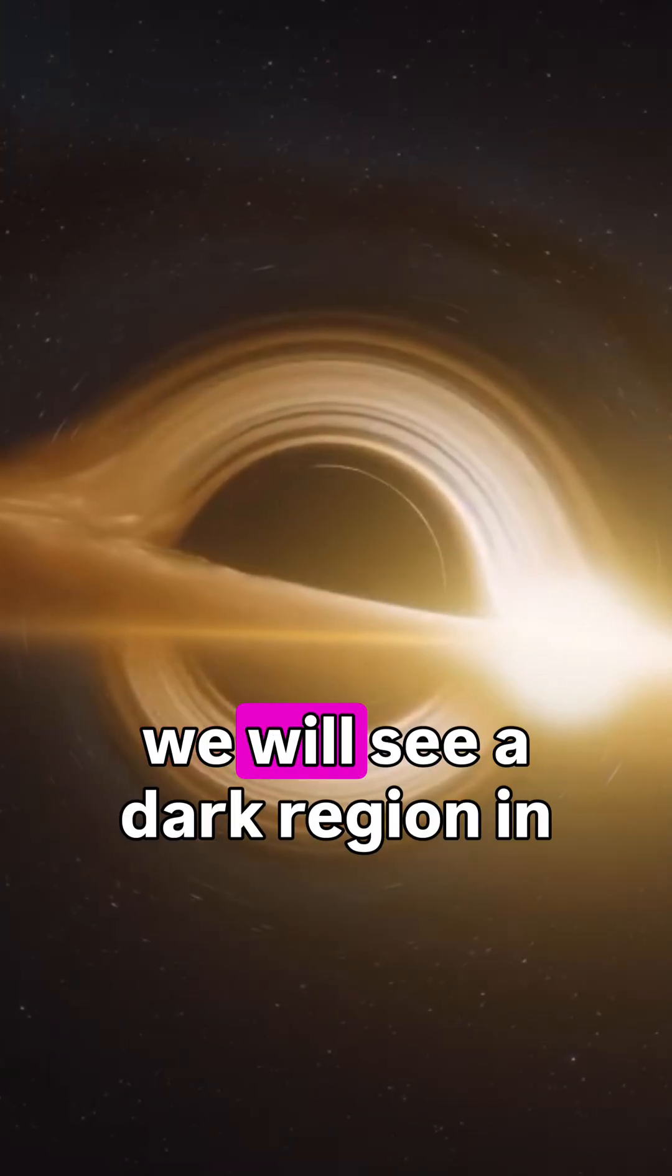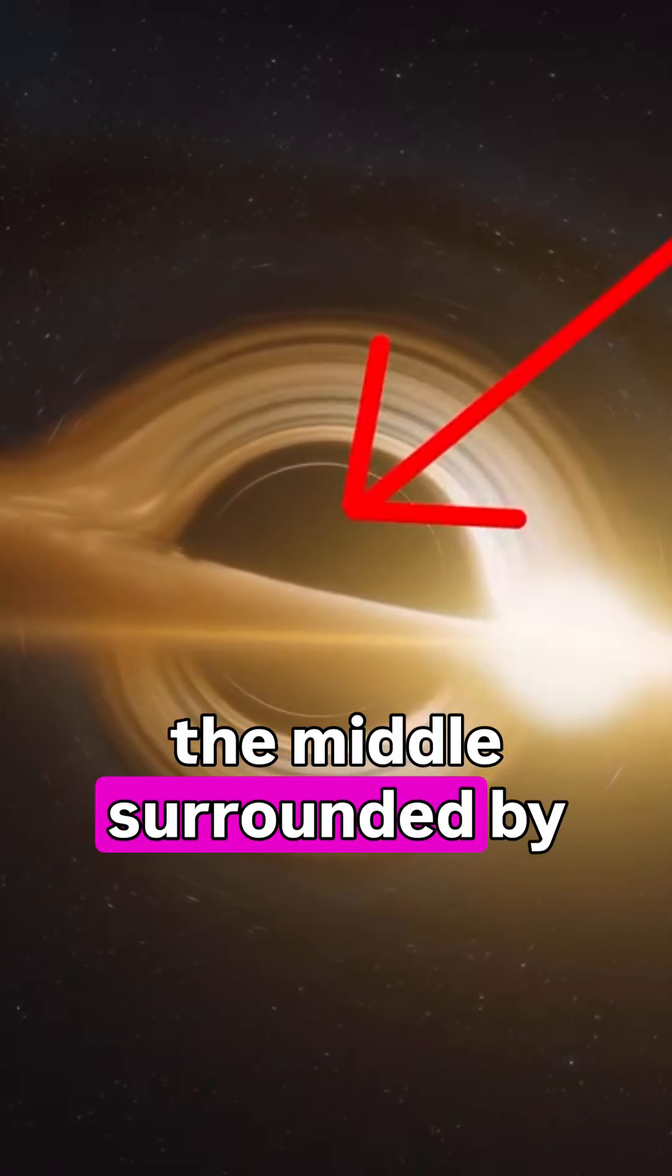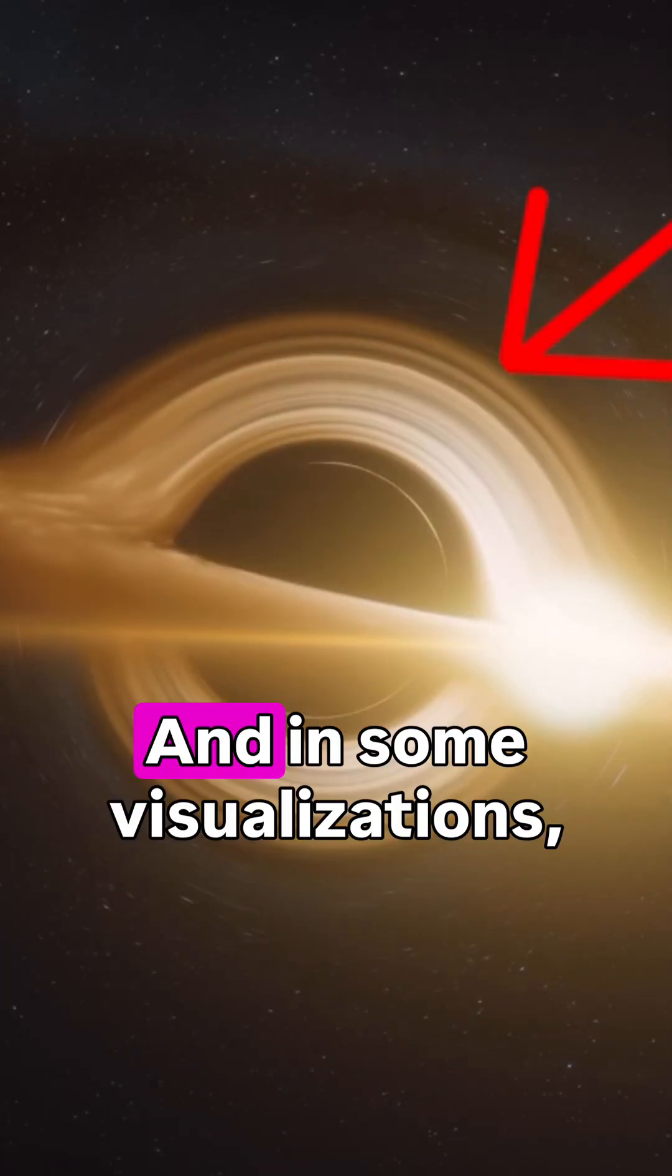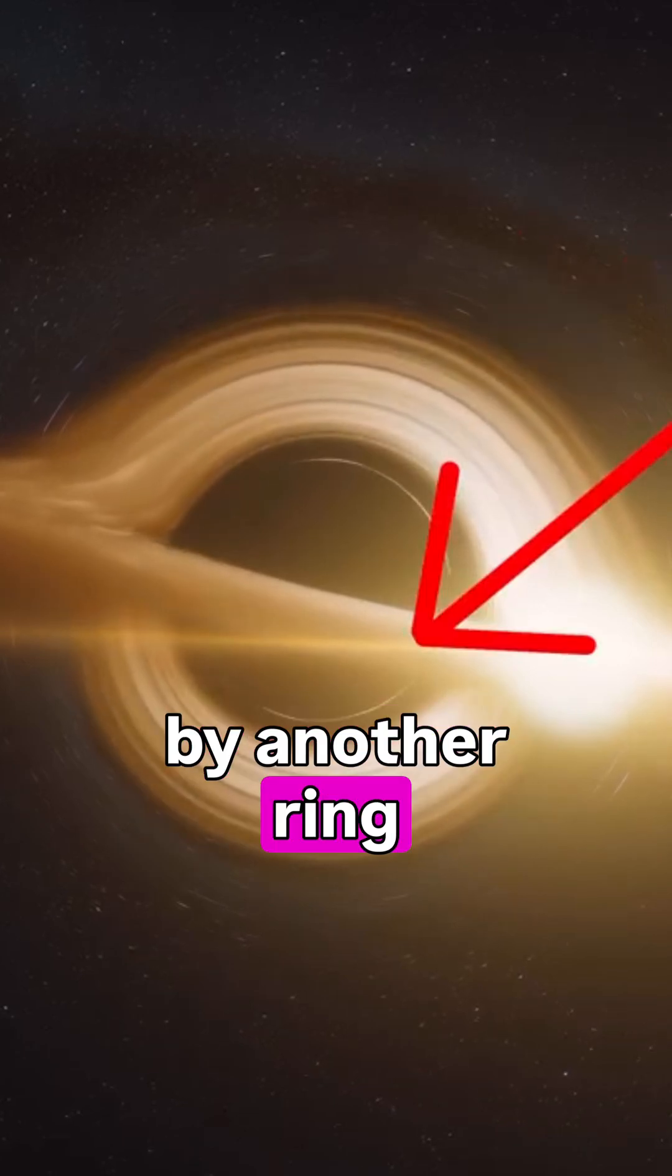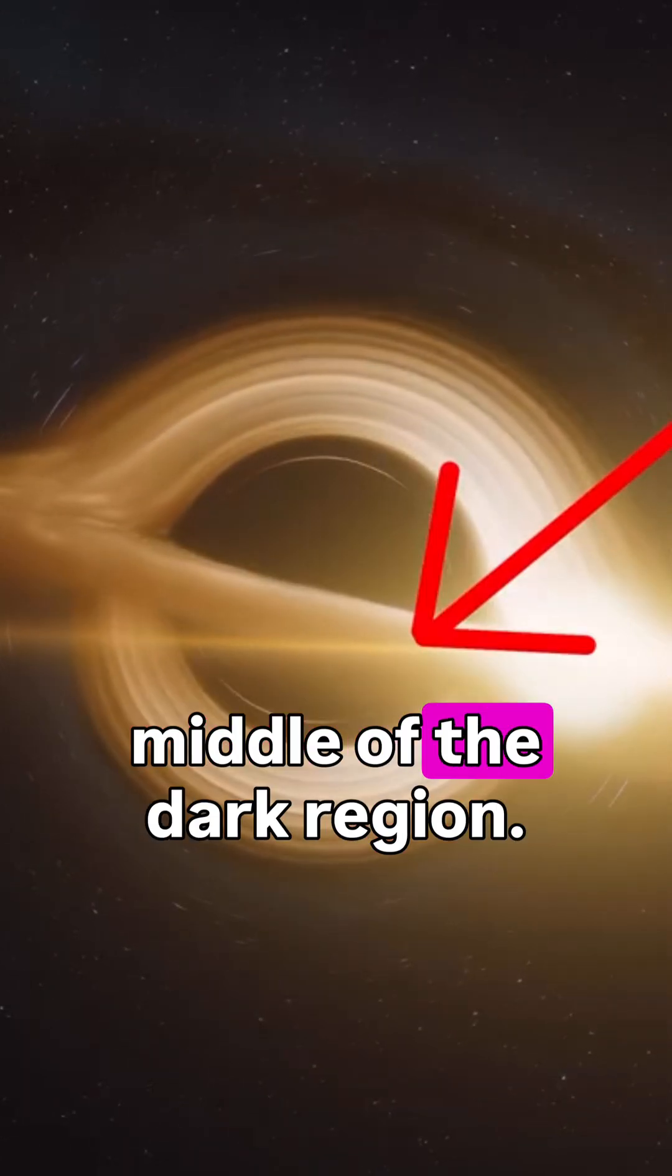If we look at the photograph of a black hole we discussed in detail in a previous part, or at any visualization of a black hole, we will see a dark region in the middle surrounded by a bright ring. In some visualizations, the black hole is also girded by another ring that passes through the middle of the dark region.